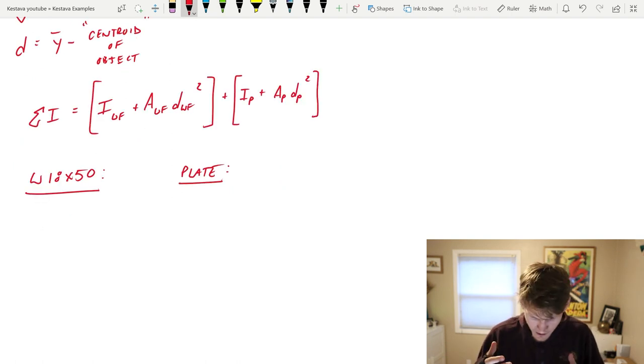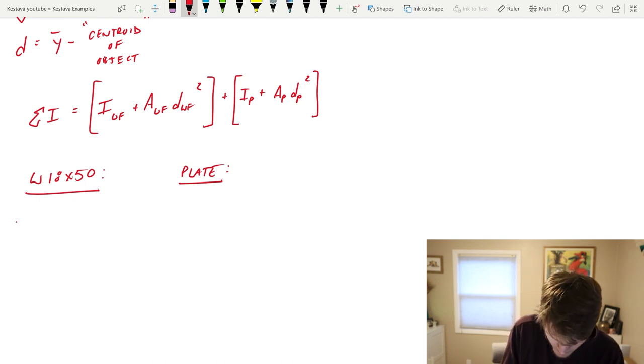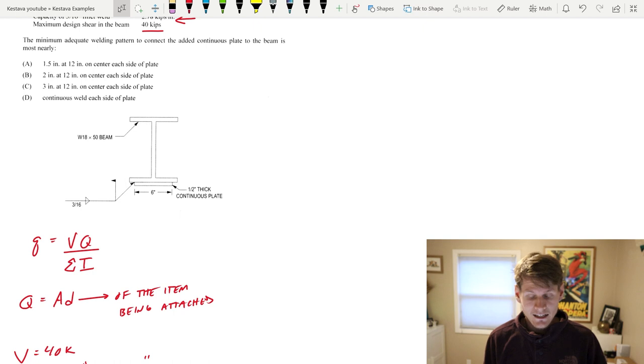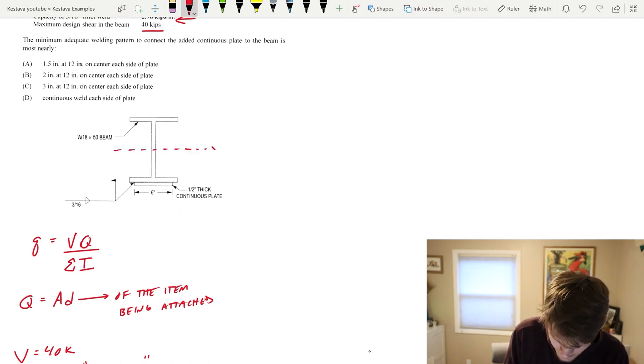What are our knowns already? A W18 by 50 is given. That is a standard size in the AISC steel manual. You can go to the front chapter in section one and grab the area of the member. AWF is equal to 14.7 inches squared. And you can also get the moment of inertia of the W18 by 50 which is 800 inches to the fourth.